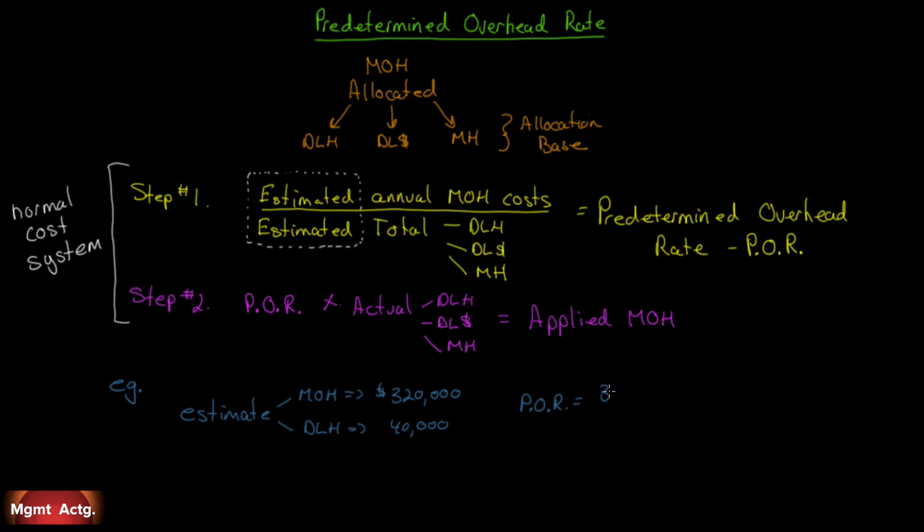Our predetermined overhead rate is our total costs divided by our total activity base or allocation base. We'll get $8 per direct labor hour. So every job that has direct labor hours, for every direct labor hour we're going to charge another $8 to cover all that overhead. Job XYZ uses 15 hours. So what do we charge it for overhead? The applied manufacturing overhead - this is not actual, this is just applied - is 15 hours times $8, which is $120. And that goes to the job cost sheet.